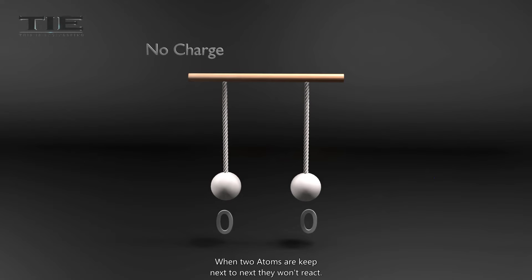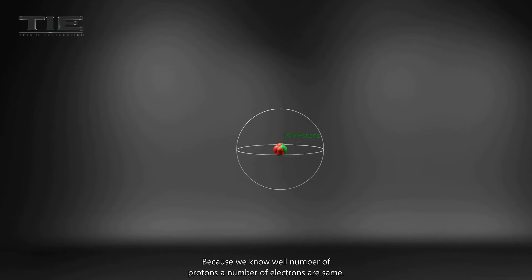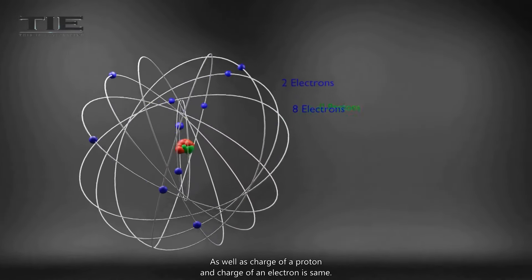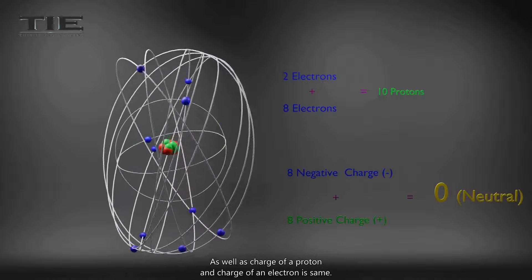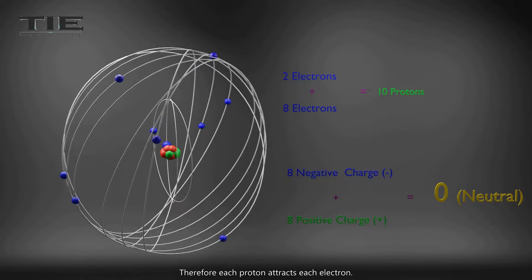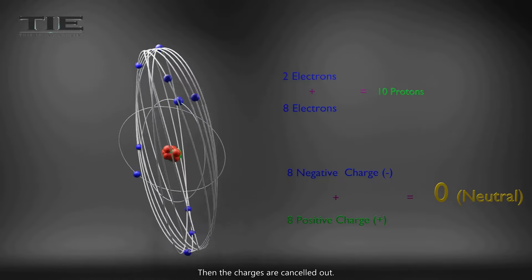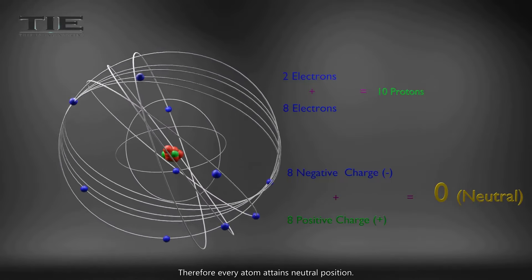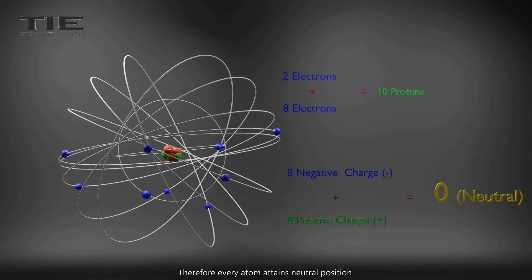When two atoms are kept next to each other, they won't react. Because we know well, the number of protons and number of electrons are the same. As well as, the charge of a proton and charge of an electron is the same. Therefore, each proton attracts each electron. Then charges are cancelled out. Therefore, every atom attains a neutral position.